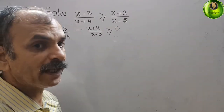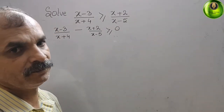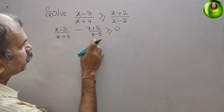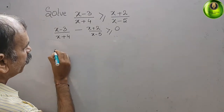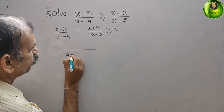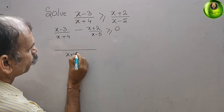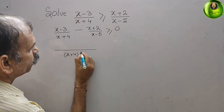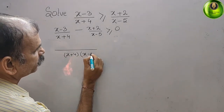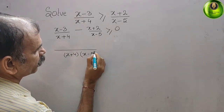Now take the LCM. The LCM should be (x plus 4) into (x minus 5).